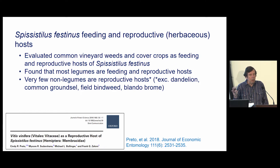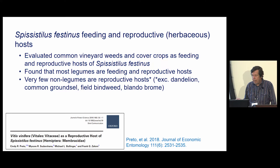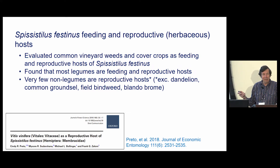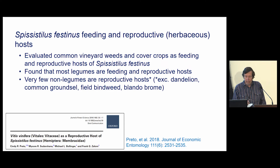We know that they're on the ground cover — do they have particular ground covers that are good feeding hosts or reproductive hosts? Reproductive hosts are those on which the treehopper can complete its life cycle, while feeding hosts are ones they simply feed on. This was a paper produced by Cindy as part of her dissertation research. We found that most legumes are both feeding and reproductive hosts, with very few exceptions. Some of these include dandelion, common groundsel, field bindweed, and blando brome, where they both feed and reproduce, but there are a number of other hosts they can feed on in the vineyard as well.